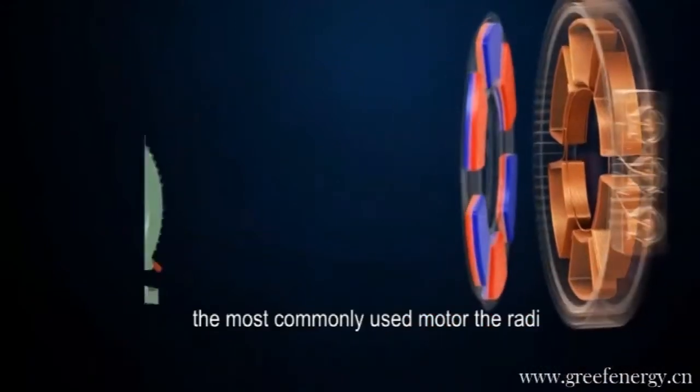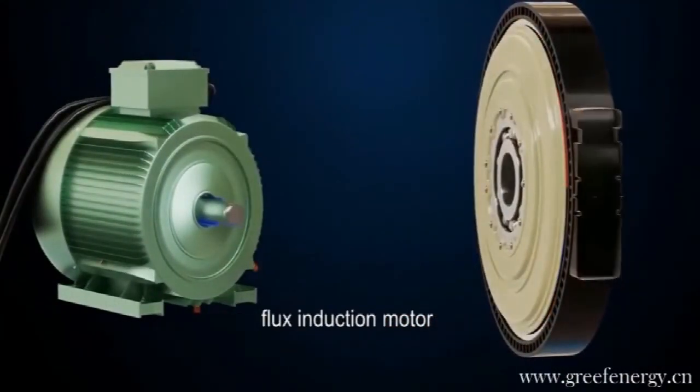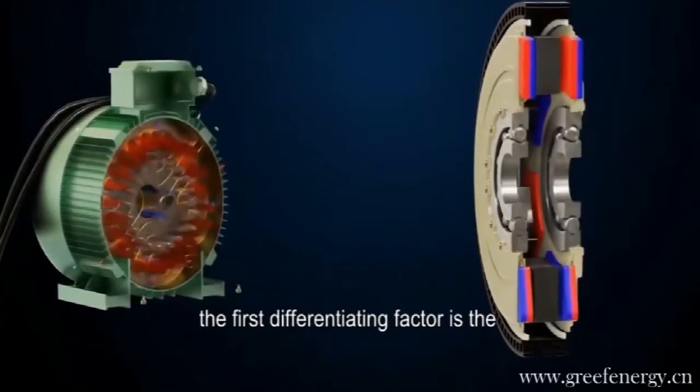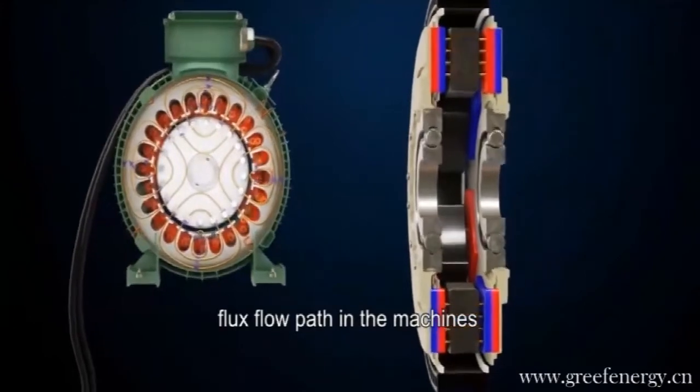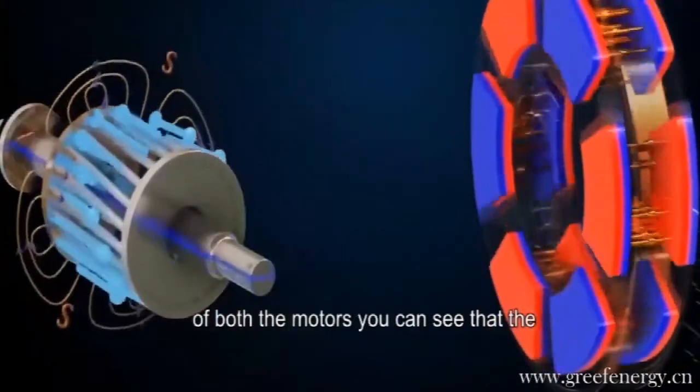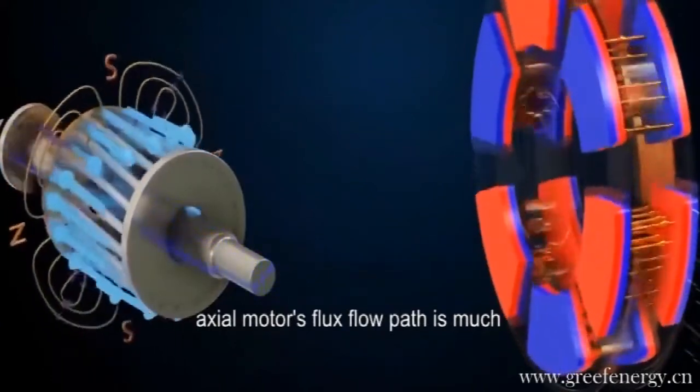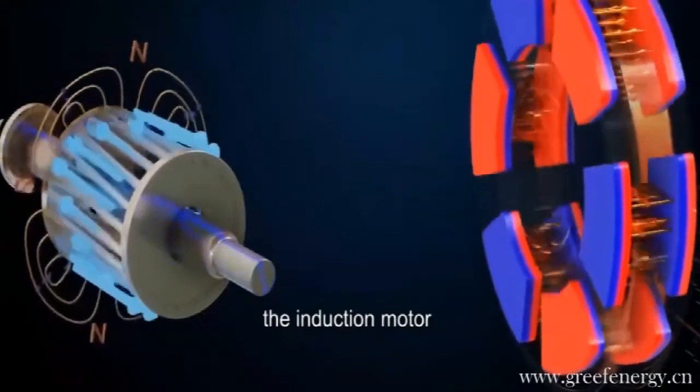Let's compare the axial flux motor with the most commonly used motor, the radial flux induction motor. The first differentiating factor is the flux flow path in the machines. If you compare the magnetic flux pattern of both the motors, you can see that the axial motor's flux flow path is much more dense and shorter when compared to the induction motor.